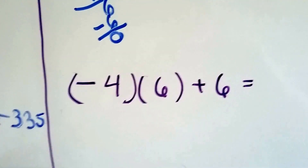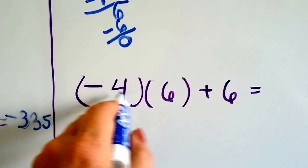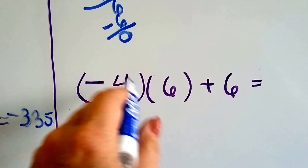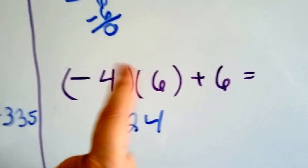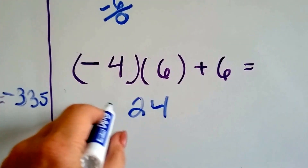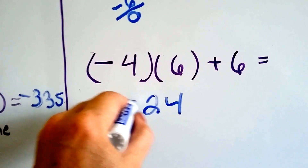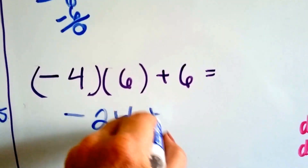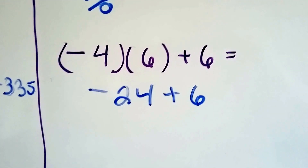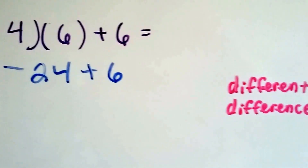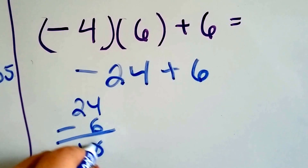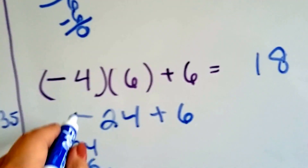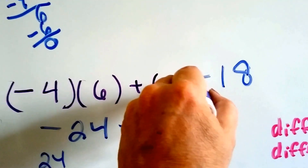When parentheses are back to back like this, that means to multiply. So we're going to multiply negative 4 by 6. We do the absolute values — 4 times 6 is 24. We have a negative and a positive — unlike signs — means negative. So it's negative 24. Now we're going to add 6. When the signs are different, we find the difference. The difference between 24 and 6 — 24 minus 6 is 18. Because the signs are different, it's going to be negative 18.